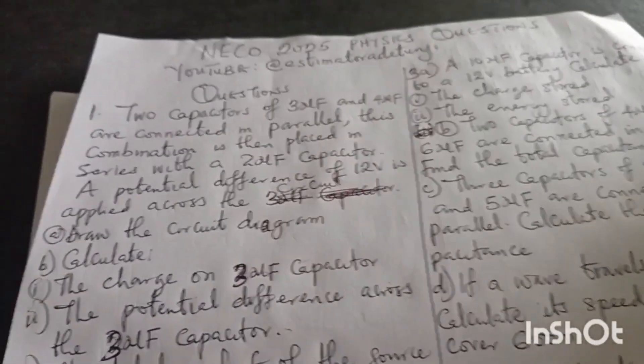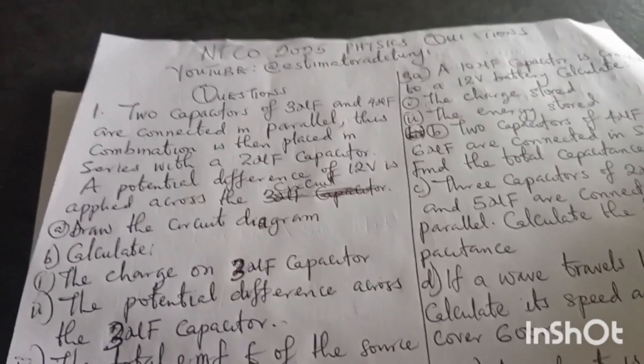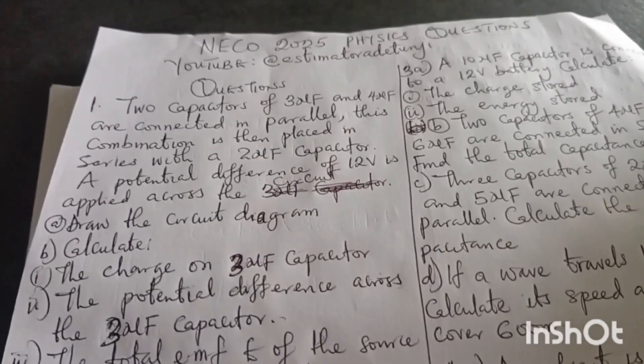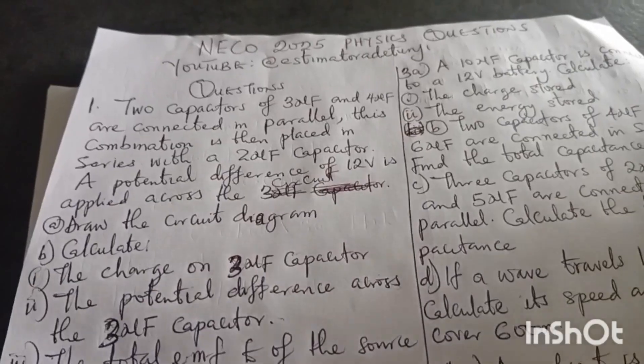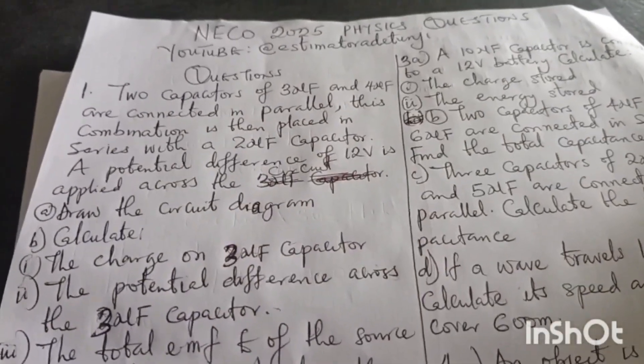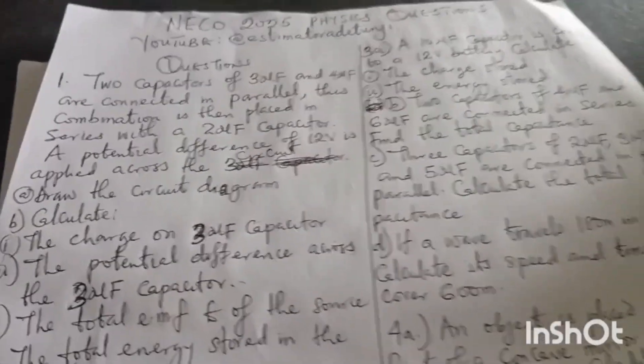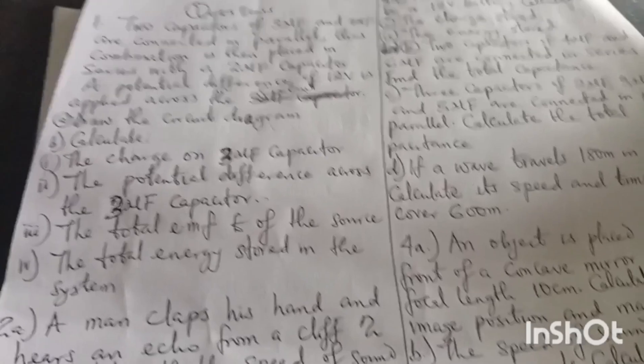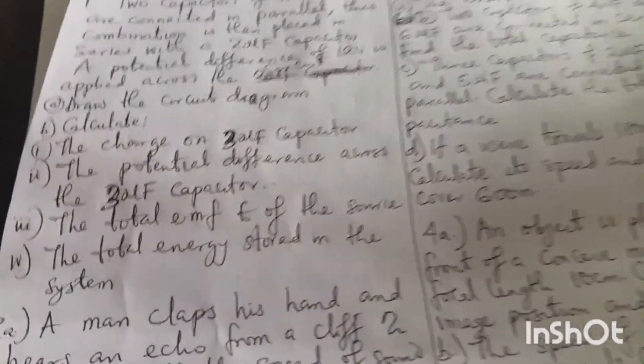And those people that are in secondary school, maybe SS1, 2, and 3. So let's start as we continue with this season of NECO. These are NECO questions, possible and likely questions that we are expecting. There is no way questions will come out in NECO and it won't pass through all these topics.